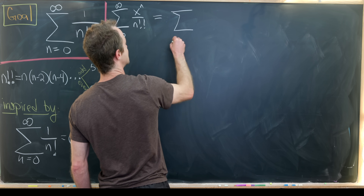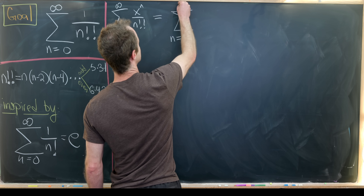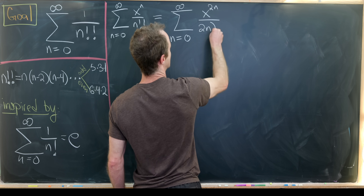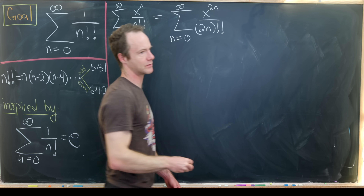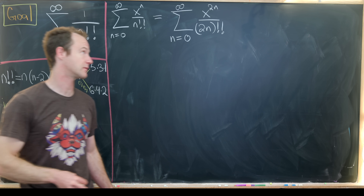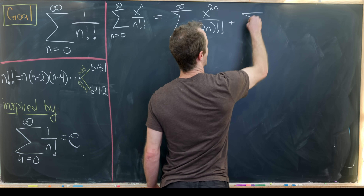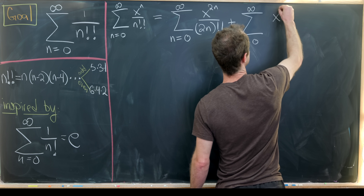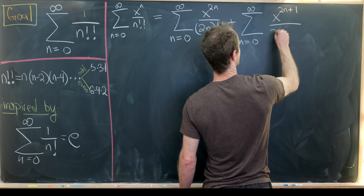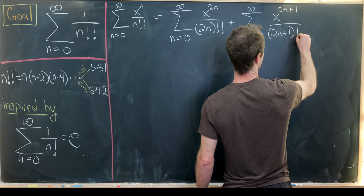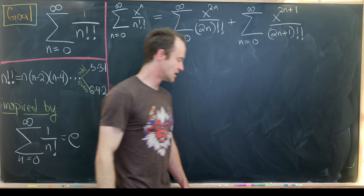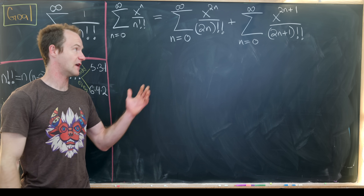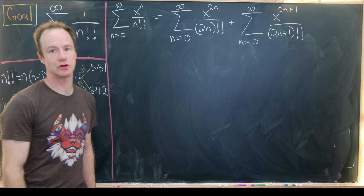The parts where n is even will look like this: the sum as n goes from 0 to infinity of x to the 2n over 2n double factorial. Then the odd parts can be written as the sum as n goes from 0 to infinity of x to the 2n plus 1 over 2n plus 1 double factorial. We'll have to calculate each of these on their own and then evaluate them at 1.